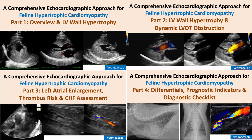If you haven't watched the first two parts yet, I highly recommend doing so before continuing. In part one, we reviewed the definition of HCM and how to determine LV hypertrophy. In part two, we discussed different LV hypertrophy patterns and dynamic LVOT obstruction, including SAM. It will greatly help your understanding of today's content.